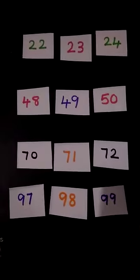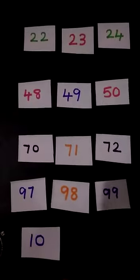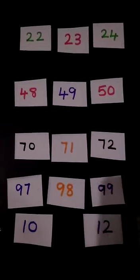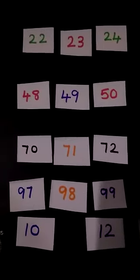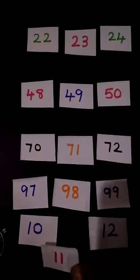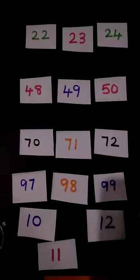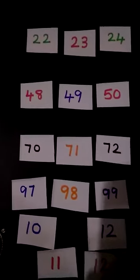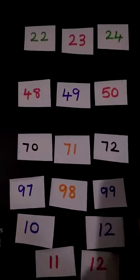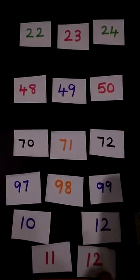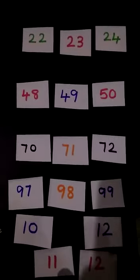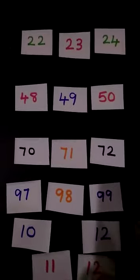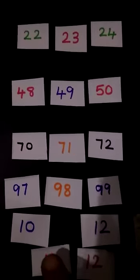We will go for the next number. This is number 10, this is number 12. So I am showing different numbers — this is number 11 and 12. These are the two different numbers. So we have to find out the correct between number of 10 and 12. Which will be the between number of 10 and 12, children? Let's start counting.